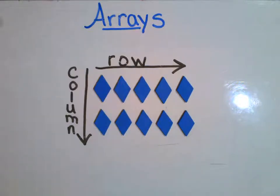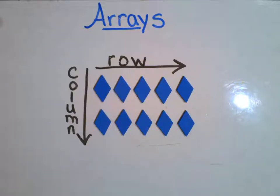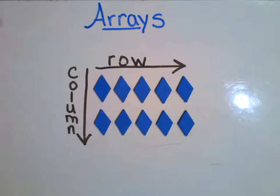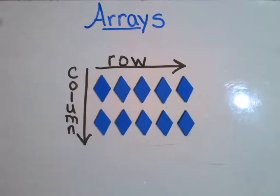Now, instead of me counting each individual item one by one, I want to use a specific strategy called repeated addition. When you hear the words repeated addition, I hear the word repeat. And repeat means I'm going to be doing something over and over again. So when I'm thinking about repeated addition, I'm going to be using the same number, adding the same number over and over again in order to find a specific sum, a total.